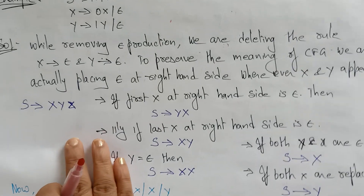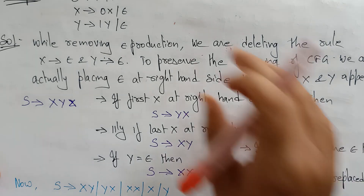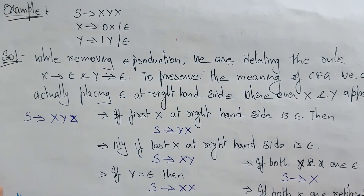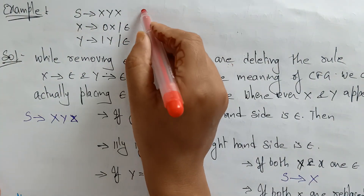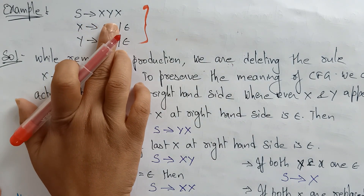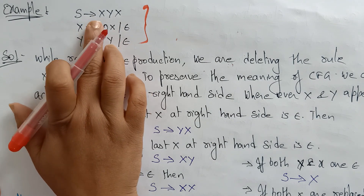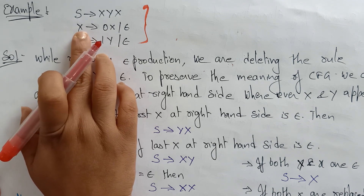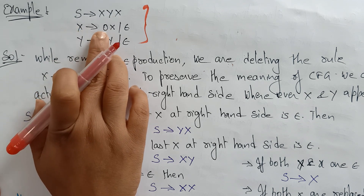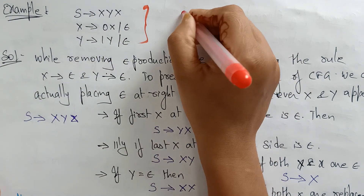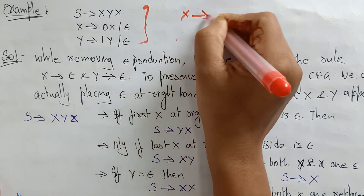Let's see the example carefully. Here you can see S determines XYX. This is one production. In this production, X is determining 0X and Epsilon — meaning X can be replaced with Epsilon.